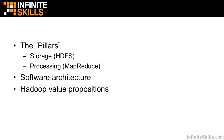In this chapter, we took a high-level overview of the pillars of Hadoop — the HDFS or storage side, and the MapReduce or processing side — which are enabled via five daemons. We took a quick overview of the software architecture, which is covered in more detail in the relevant chapters, and we also took a quick overview of Hadoop's value propositions.